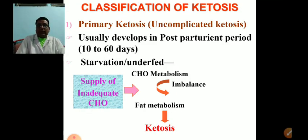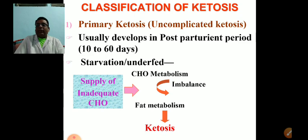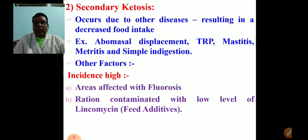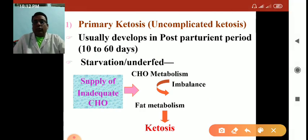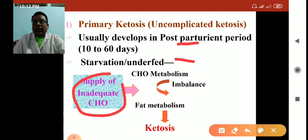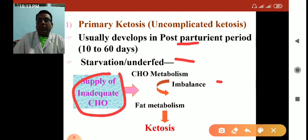The classification of ketosis begins with primary ketosis, also called uncomplicated ketosis. In primary ketosis, there is inadequate supply of carbohydrates, leading to carbohydrate metabolism imbalance. This occurs due to starvation or the post-parturient period. Because of inadequate carbohydrate supply, imbalance is established. Once carbohydrate imbalance exists, beta oxidation of fat comes into the picture, fat metabolism proceeds, and the disease ketosis emerges.